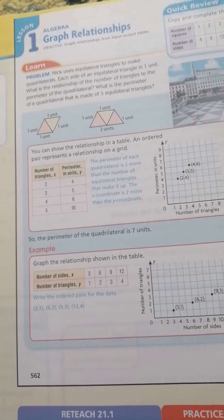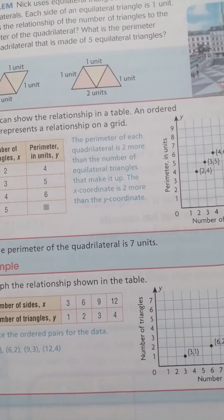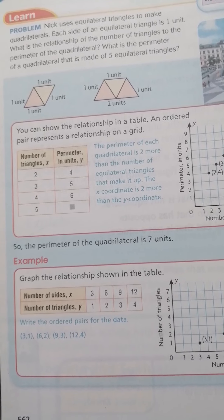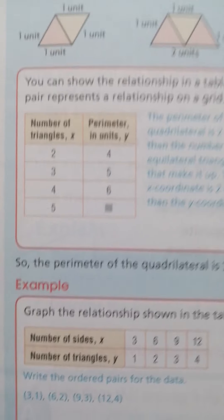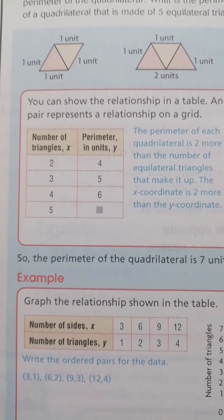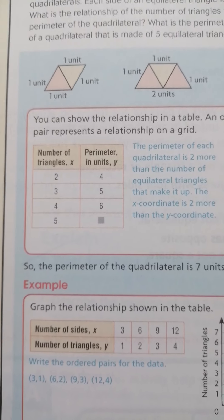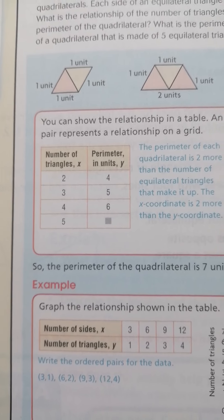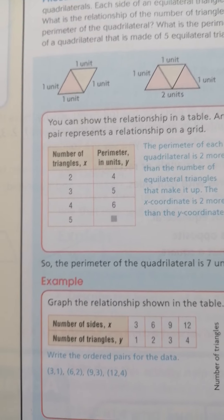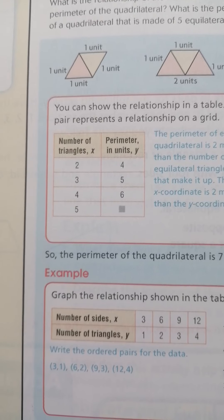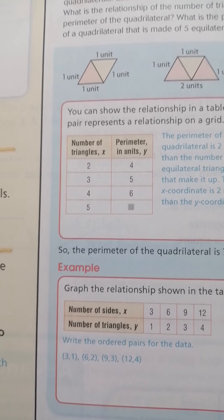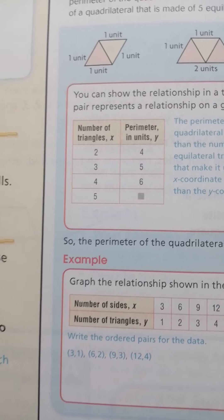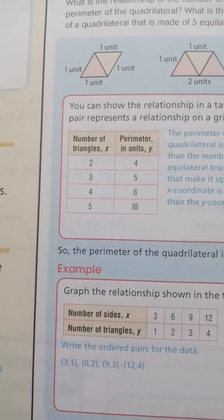The relationship between the number of triangles and the perimeter of each quadrilateral. For example, here in this, see this table: number of triangles x is 2, perimeter in unit y is 4. Then 3 in x, 5 in y, 4 in x, 6 in y, then 5 in x, how many numbers in y?